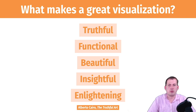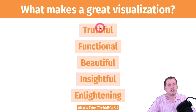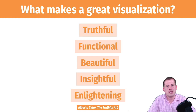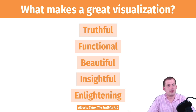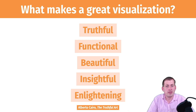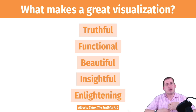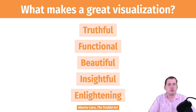Cairo's five criteria are: truthful, functional, beautiful, insightful, and enlightening. You can use these to grade any graphic you encounter. Truthful means it's based on honest research — you're not trying to mislead people willfully. Functional means it's an accurate description of the data, built in a way that lets people do meaningful things with it. If it's just pretty but doesn't communicate something important, it's not functional.